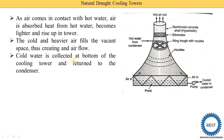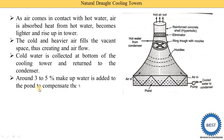Cold water is collected at the bottom of the cooling tower — also called the pond — and returned to the condenser using a pump. Around three to five percent makeup water is added to the pond to compensate for water loss due to evaporation, since some quantity of water evaporates with the air.